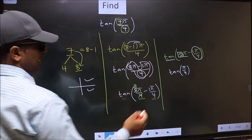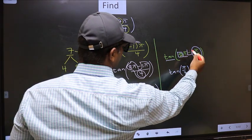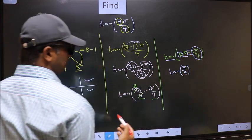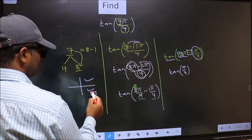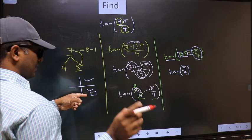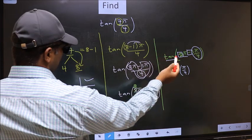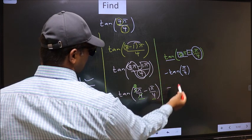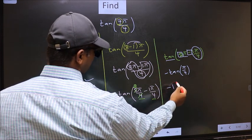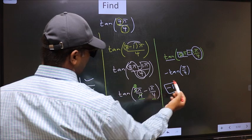We should look at this symbol. Here we have negative. That means angle lies in the fourth quadrant. And in the fourth quadrant tan is negative. So we should put negative. So negative tan π/4 is 1. This is our answer.